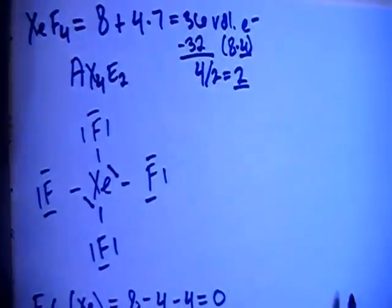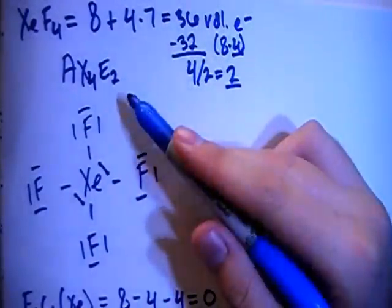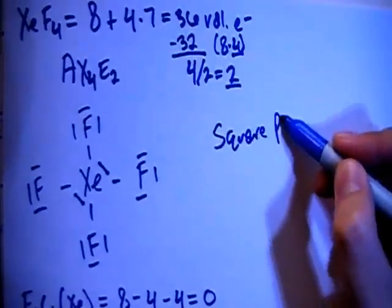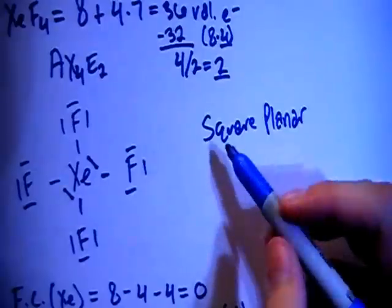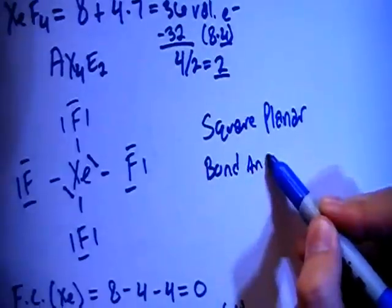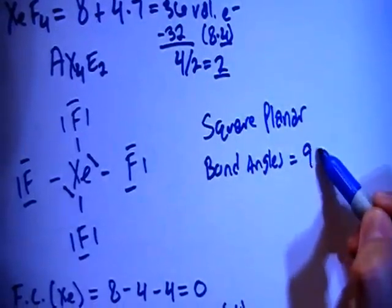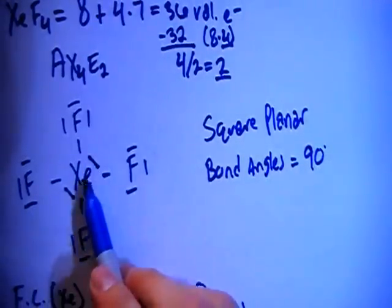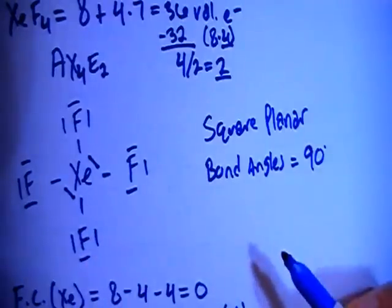Now we can talk about the structure, or the shape, rather. So this is going to be AX4E2. Looking at this shape, it's going to be a square planar shape. And square planar shapes come with bond angles that are equal to 90 degrees in between each bond because these two electron non-bonding pairs are going to be on top and on bottom of this square plane of bonds to the fluorines.